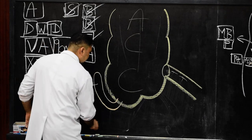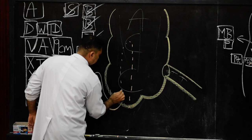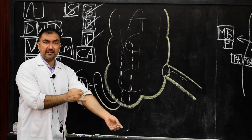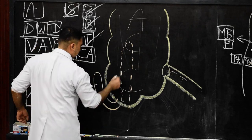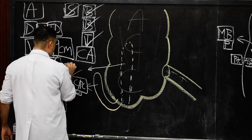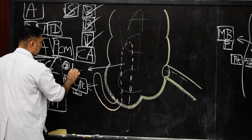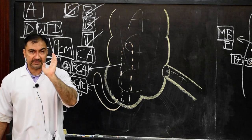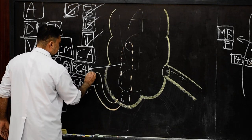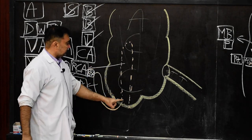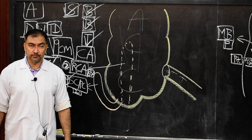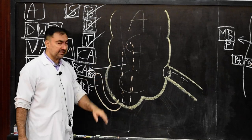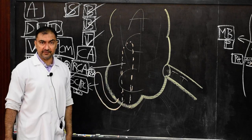Position number 2 is the retrocecal appendix, shown as if present behind the cecum with its tip directed above. This is the most common position — present in approximately 60% of subjects. It is also known as the twelve o'clock position.